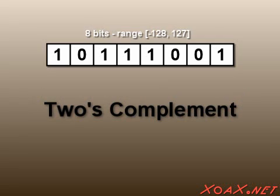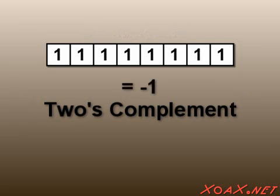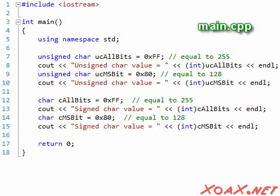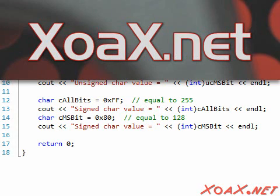This is done using what is called a two's complement representation. For example, an 8-bit two's complement representation for negative 1 has all the bits equal to 1, and the representation for negative 128 has the most significant bit equal to 1 and the remaining bits equal to 0. We illustrate this with our first program, which is available on our lesson page at soax.net.